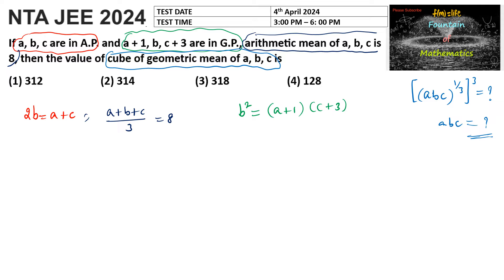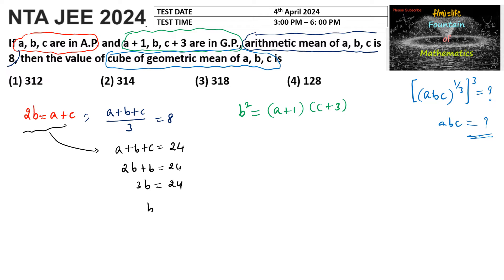When (a plus b plus c) upon 3 is equal to 8, we get a plus b plus c is equal to 24. Since a plus c is equal to 2b, substituting gives 2b plus b is equal to 24, so 3b equals 24, meaning b equals 8. Then 2 into 8 gives a plus c equal to 16.